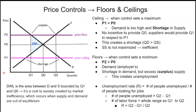The deadweight loss is the triangle between demand and supply bounded by Q1 and Q0 — it represents the cost to society created by market inefficiencies. This occurs when supply and demand are out of equilibrium. When social surplus is maximized, there would be no deadweight loss triangle because everyone would be happy and the market would work at its best efficiency.